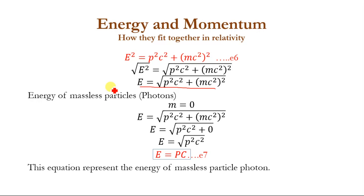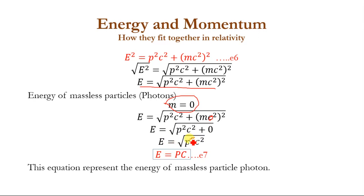Now what will be the energy of a particle that has mass equal to zero, like photons? Photons have rest mass equal to zero. Putting m = 0 into equation number 6, E = √(P²c² + (mc²)²), the equation becomes E = √(P²c²), so E = Pc. This is the energy of a massless particle like a photon, where c is the speed of light and P is the momentum of the photon.